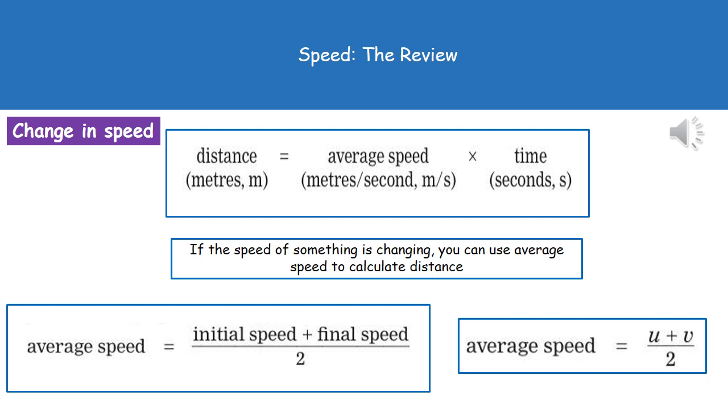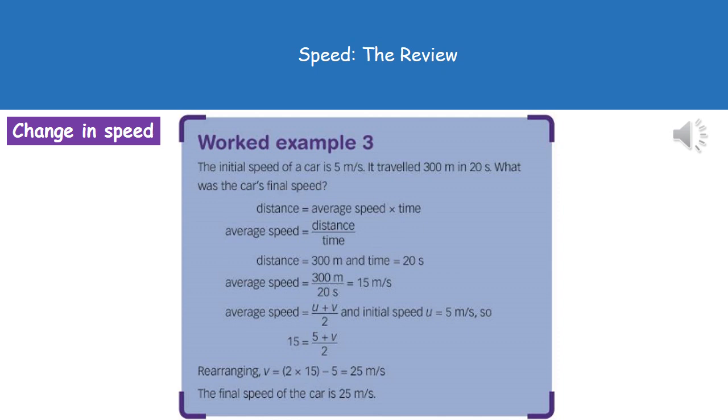In the bottom left we can see the equation that we need to use for that, which is our initial speed plus the final speed divided by two. Those can also be changed into letters there for you, so our initial speed is u and the final speed is v.